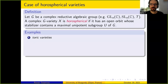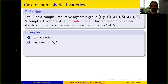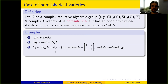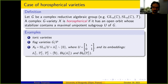Examples of horospherical varieties include toric varieties (the maximal unipotent subgroup is trivial) and flag varieties G/P with P a parabolic subgroup (since P contains a Borel subgroup whose unipotent radical is always a maximal unipotent subgroup). Another example: taking U the upper triangular unipotent matrices in SL2, the variety SL2/U is horospherical and isomorphic to A^2 \ {0}. The SL2-equivariant embeddings of this open orbit give six varieties: A^2, P^2, P^2\{0}, the blowup of A^2, and the blowup of P^2.